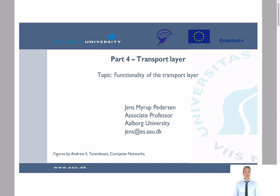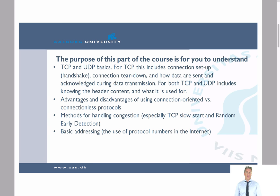Welcome to part 4 of the course, which is about the transport layer. In this particular video, I will introduce you to the functionality of the transport layer. The purpose of this part of the course is for you to understand TCP and UDP basics. For TCP, this includes the connection setup, the handshake, connection teardown, and how data is sent and acknowledged during the transmission. For both TCP and UDP, it also includes knowing about the content of the header and what it is all used for. We will also speak about advantages and disadvantages of using connection-oriented and connectionless protocols. You will learn about methods for handling congestion, especially TCP slow start and what is called random early detection. Moreover, you will learn about basic addressing and the use of protocol numbers in the internet.